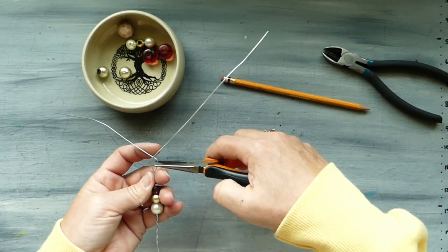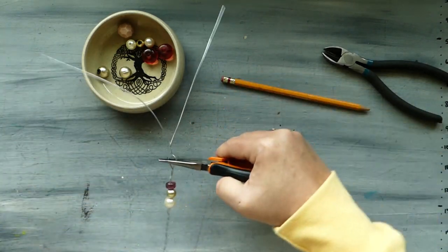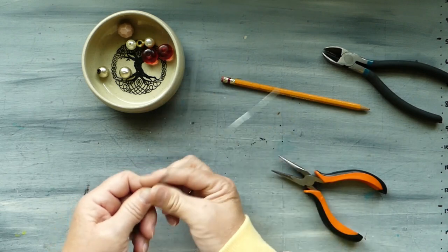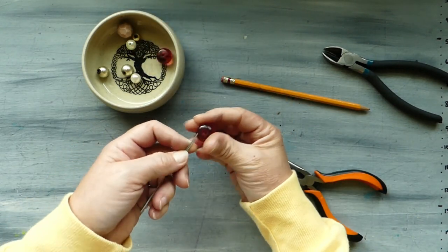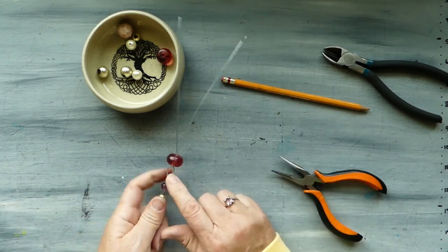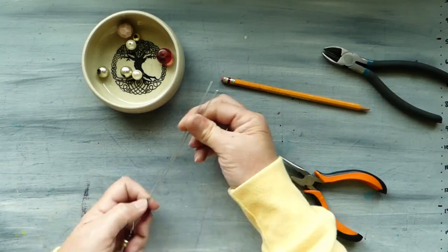And then we grab our pliers again and we give another couple twists, bringing our wires back together like this. We're going to take one of these great big pink ones and we're going to pop it on there. And this little loop has now stopped this bead from sliding down.